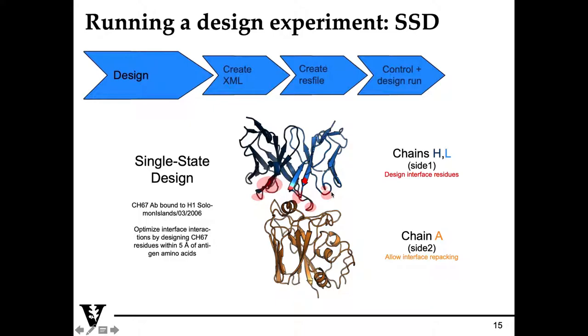During design, we'll be designing the red residues, and then we'll be allowing the residues that interact with these red residues on the gold side to reorient themselves to increase the binding energy score, or decrease the binding energy score, excuse me.